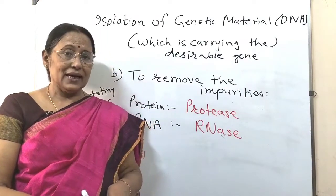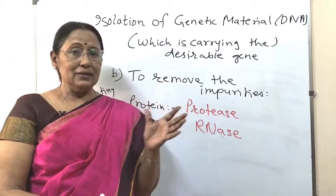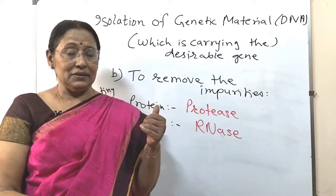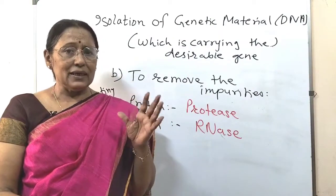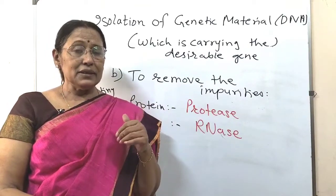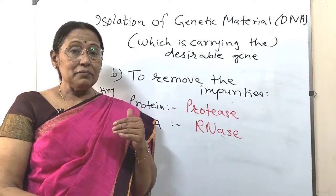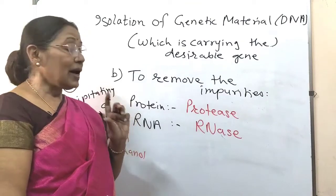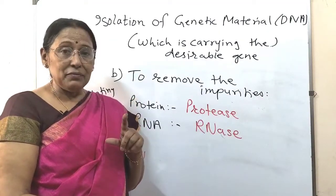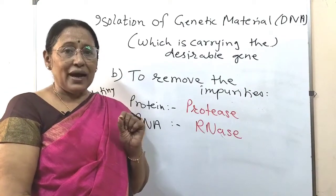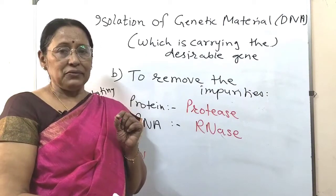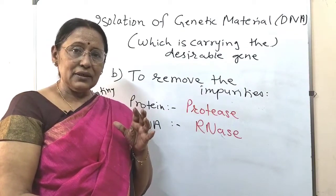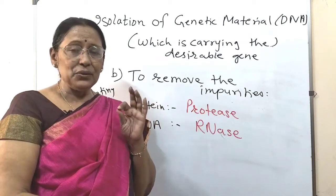In the 12th board exam, a question was asked: a student finds a gene of great importance for agricultural purposes in a fungal cell — how will you extract the gene and amplify it? When writing your answer, do not blindly list all steps. Since a fungal cell is mentioned, you are expected to specifically write chitinase while removing the barriers. These small details make the difference between students. Modify your answer according to the question and write to-the-point answers.